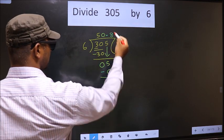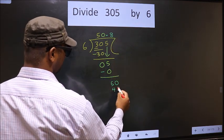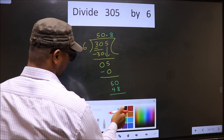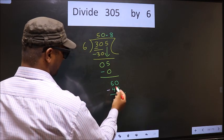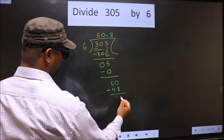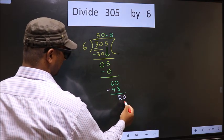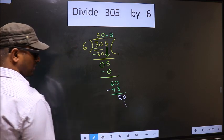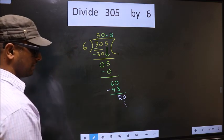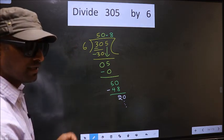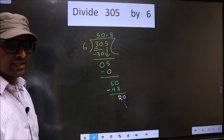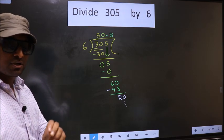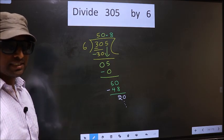A number close to 50 in the 6 times table is 6 × 8 = 48. Subtract: 50 minus 48 = 2. Take 20 and the division continues. Did you understand where the mistake happens? Make sure you do not make that mistake.